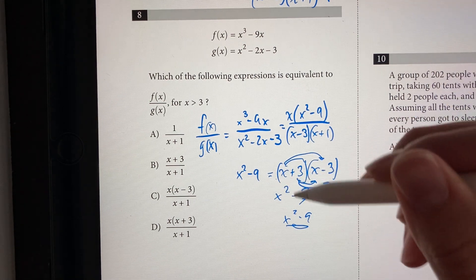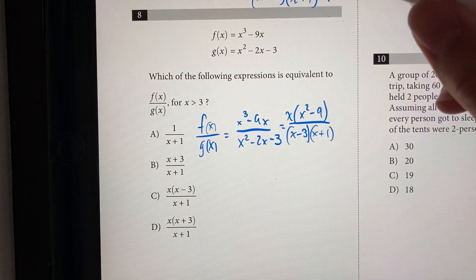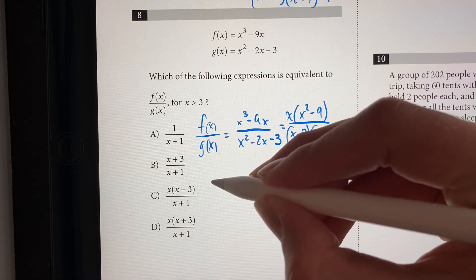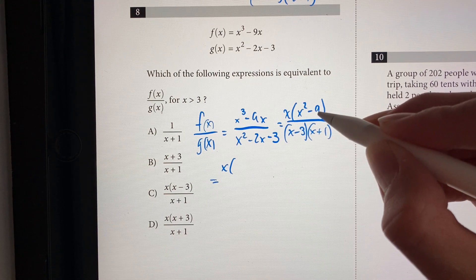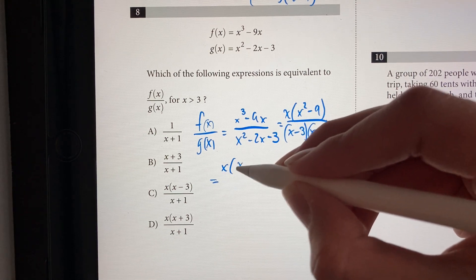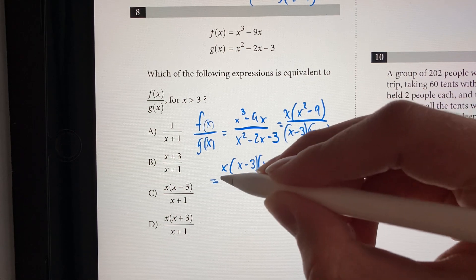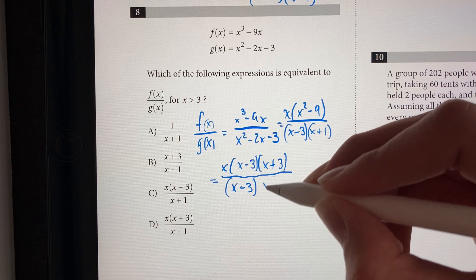That indeed equals x squared minus 9. So now that we wrote that, we can rewrite the numerator. So this expression is now equal to x times x squared minus 9, which I told you was x minus 3 times x plus 3, and then that whole thing divided by x minus 3 times x plus 1.